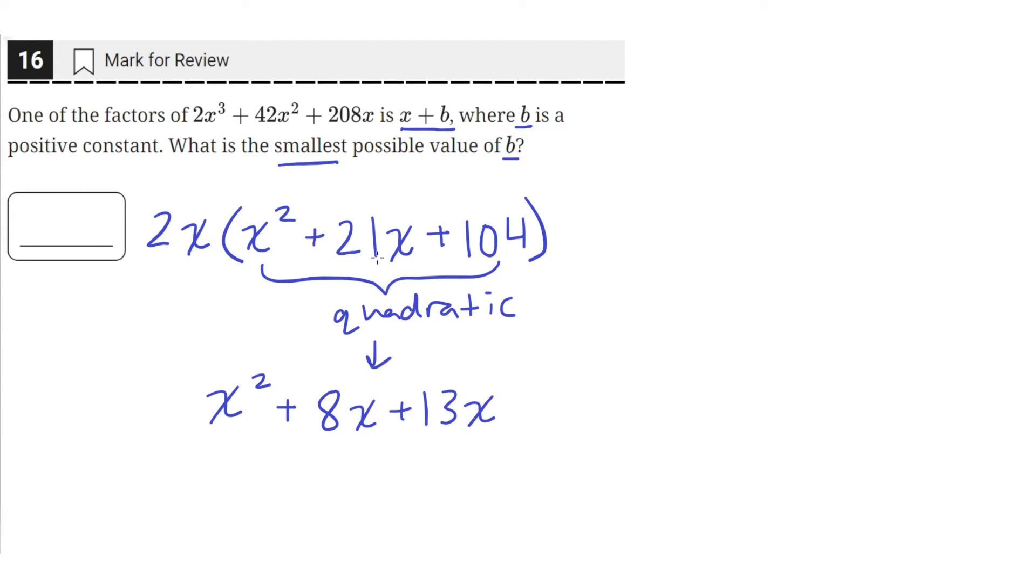So we'll split 21x into 8x plus 13x, which equals 21x, but now the coefficient of the x terms, 8 and 13, when multiplied together, equal 1 times 104. And this splitting of the x term will allow us to factor by grouping.